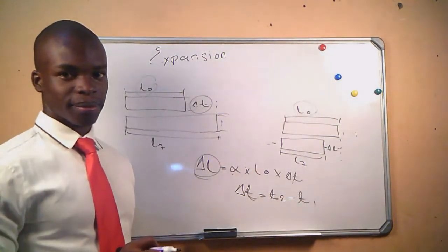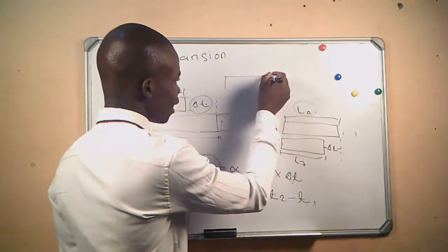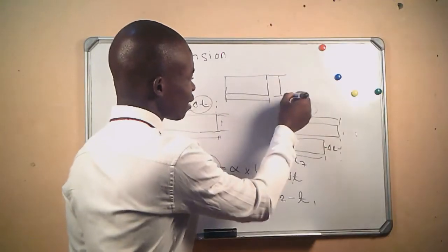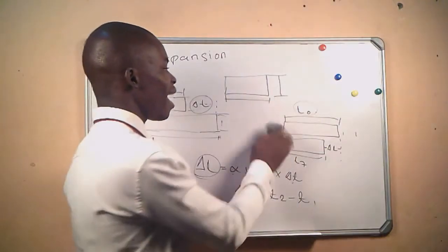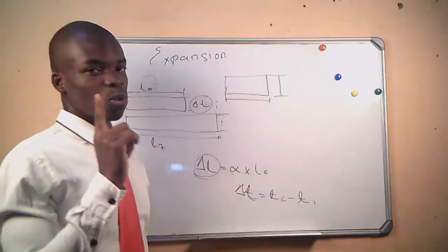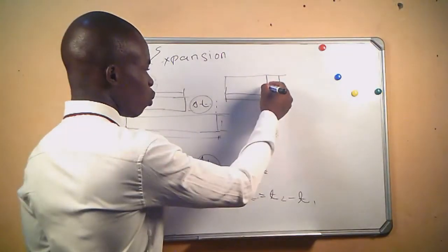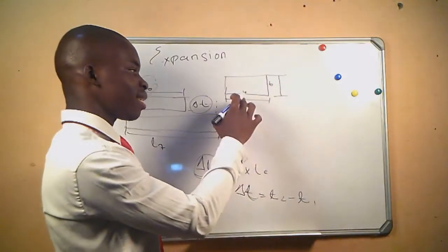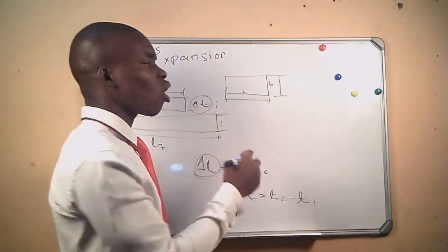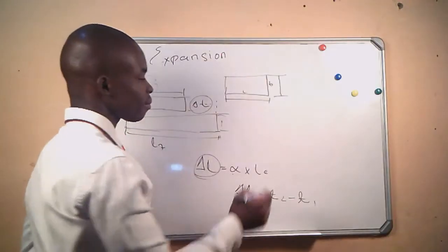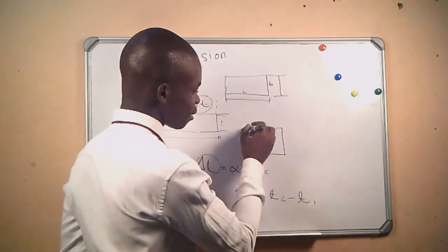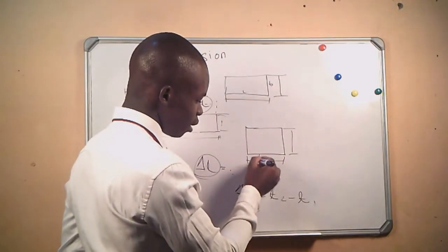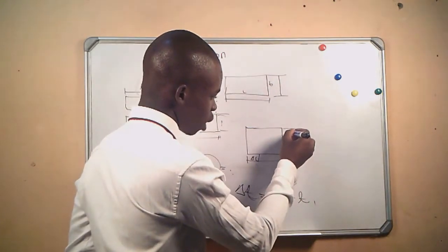Since we said this is linear expansion, what if we now have a material where it increases in this side and also increases in this side? That one we call area expansion — it's no longer linear expansion. We know area is equal to length times breadth, so both this part and this part are increasing. We will have an object increasing with this being our final length on one side and this being our final length on the other, with a change in length on each side.